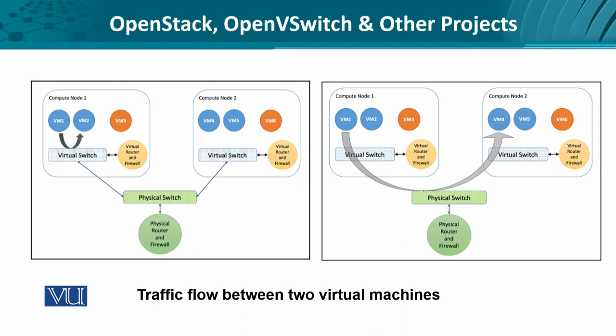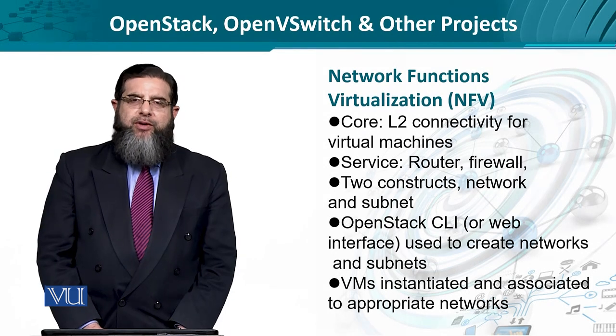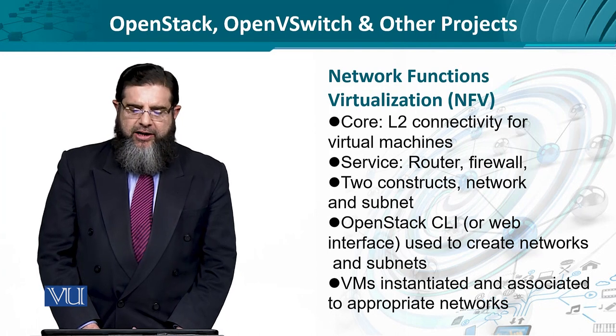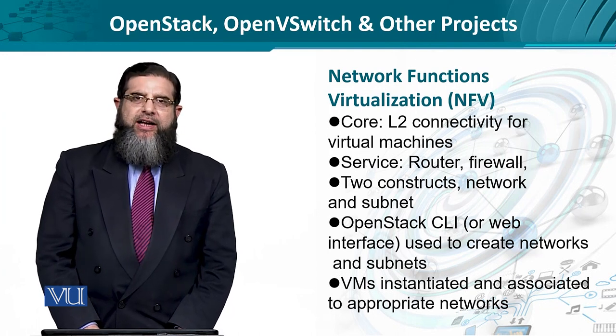On the right-hand side, the same scenario is extended where VM1 wants to communicate with VM4. In this case, the two virtual switches would forward the traffic to the external part of their network — that is, the virtual switch sends over to the physical switch, and then back to the virtual switch of ComputeNode2. This leads us to the concept of network function virtualization that we have already seen in preceding lectures, but here we are going to look at it again.